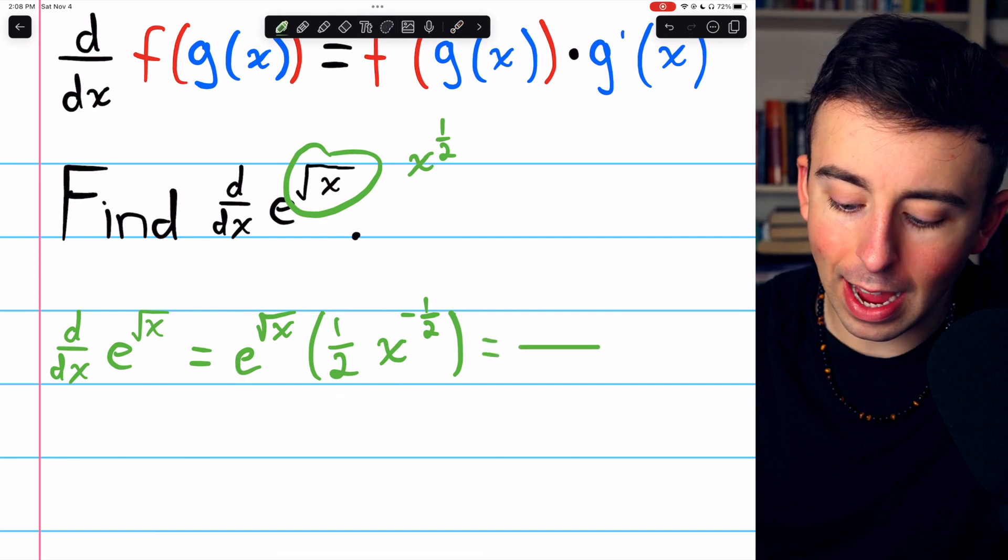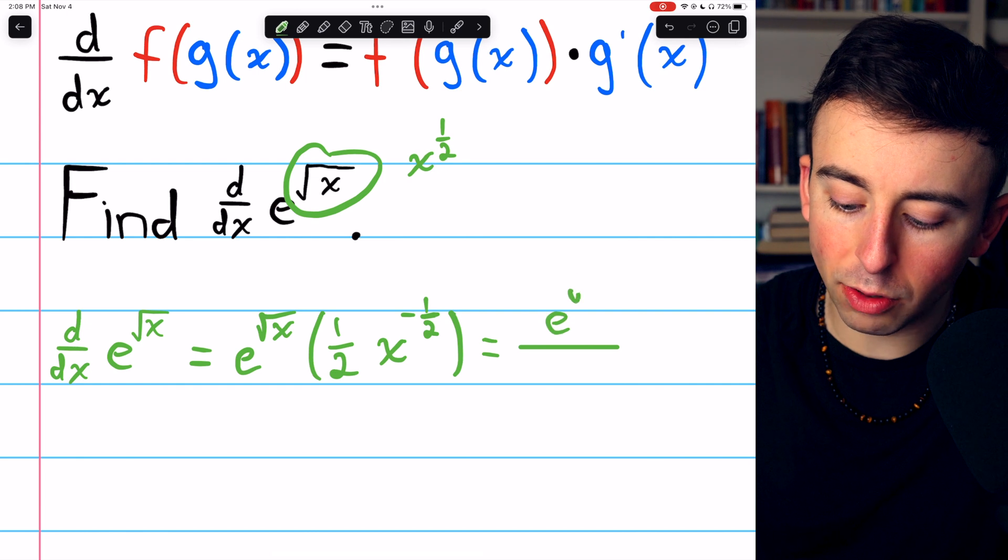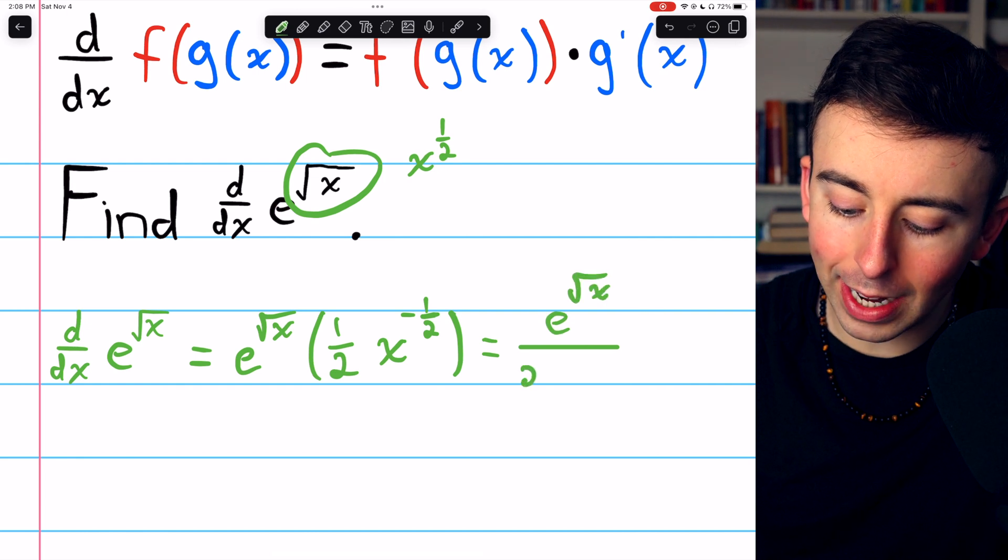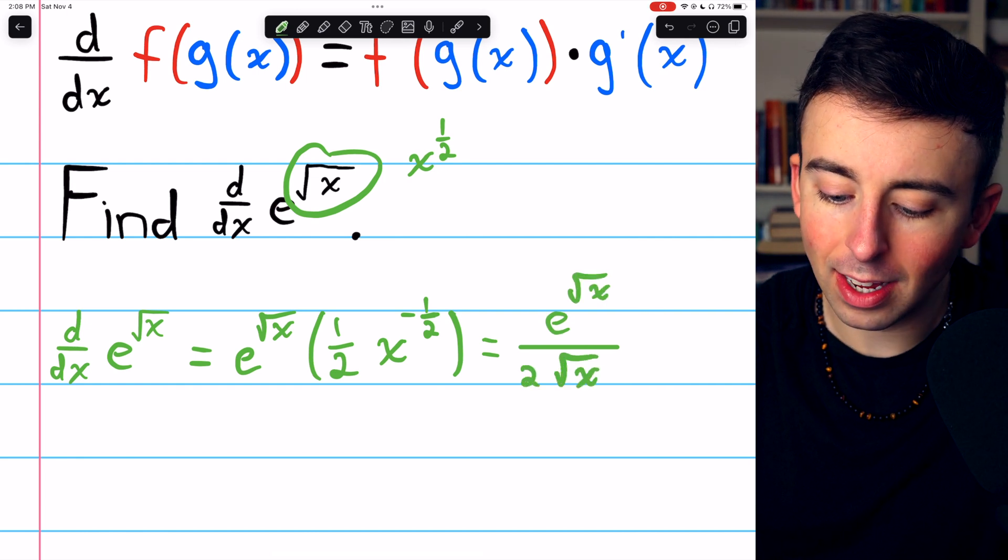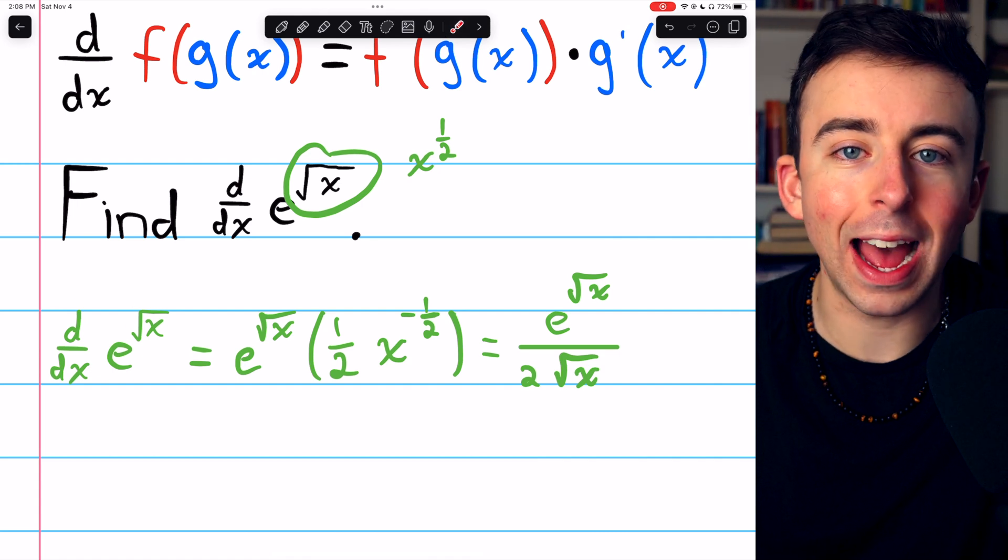And if you like, we could rewrite this as follows: e to the square root of x divided by 2 root x, and that's the derivative of e to the square root of x.